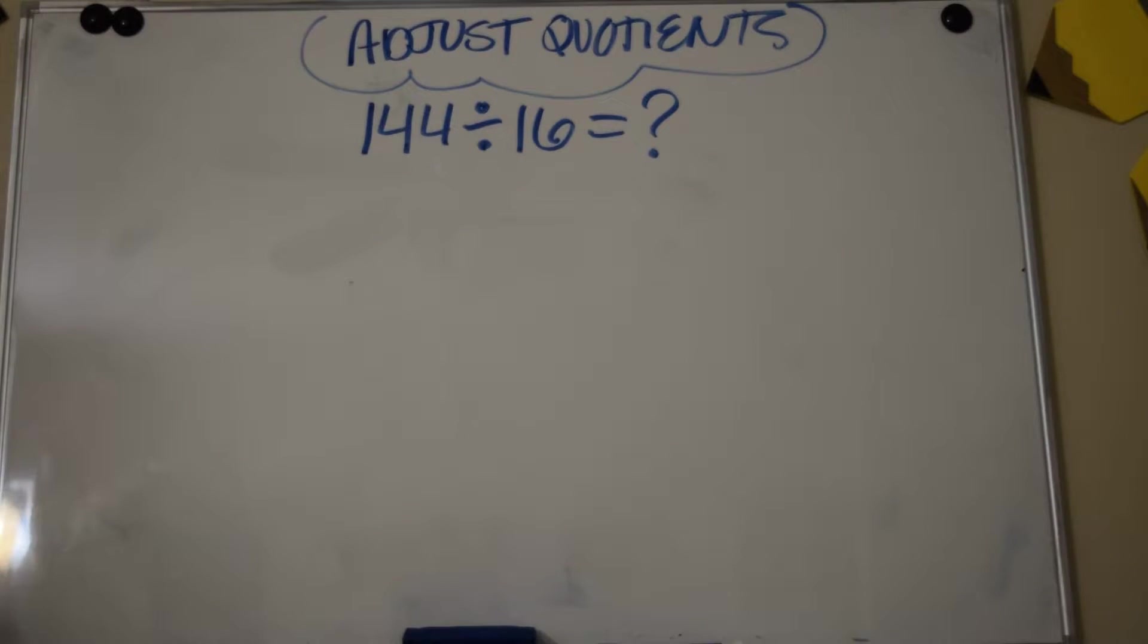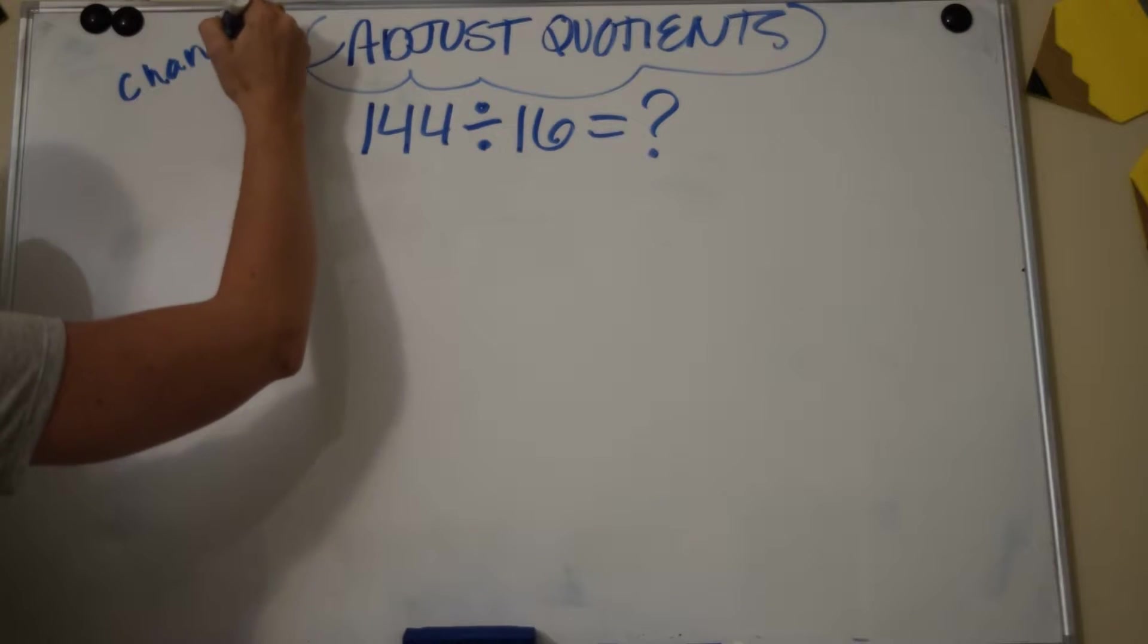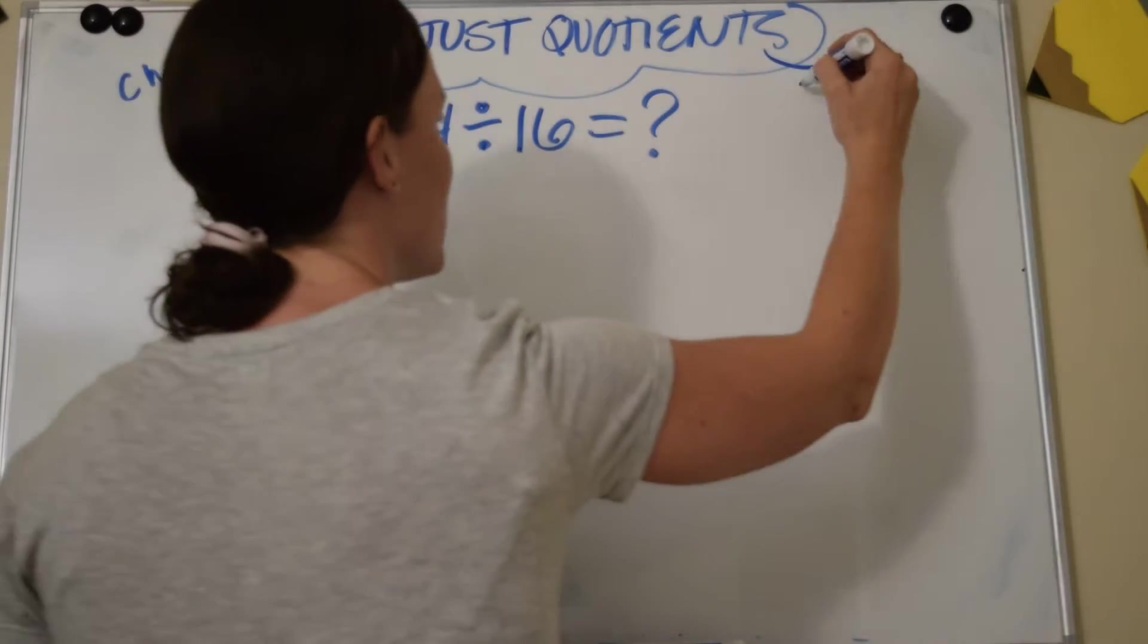All right you guys, so in today's lesson we are adjusting quotients. Now what does that mean? Adjust essentially means to change a number, and quotient is the answer to a division problem.